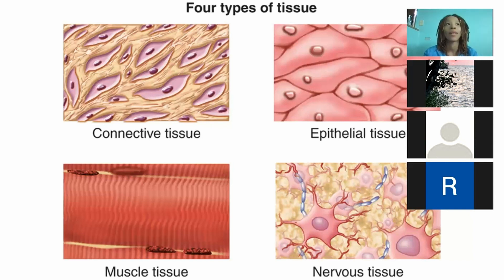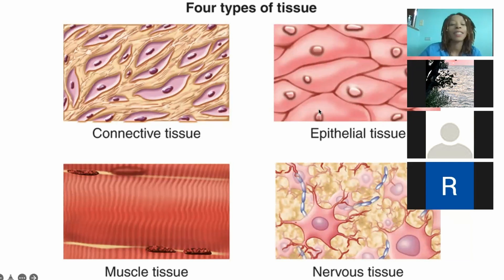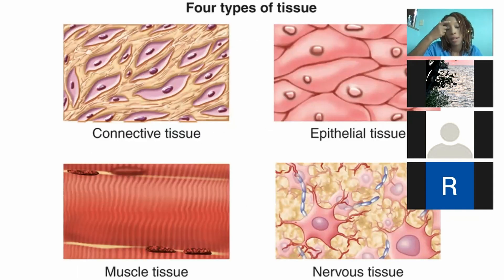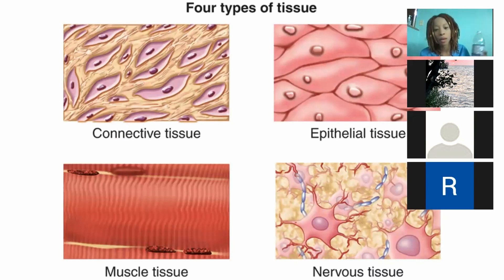Smooth muscle — in the intestines, and the uterus as well. So we can begin the session now. Today's focus is epithelium; we're not going to worry too much about exocrine glands. We will also be looking at connective tissues, muscle tissues, and nervous tissues. Have you learned about these tissues in any other course?